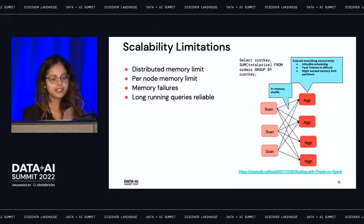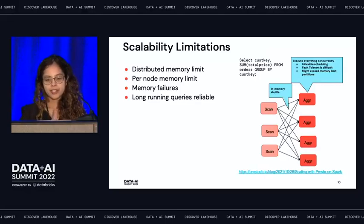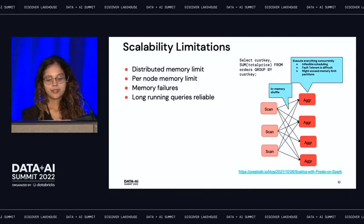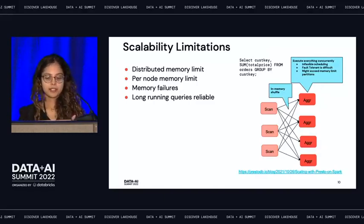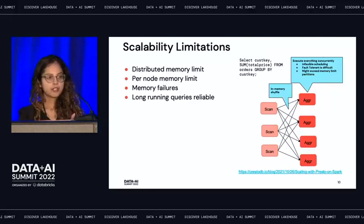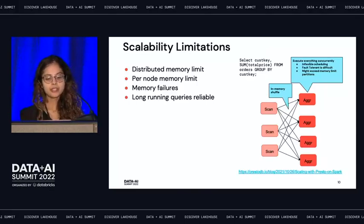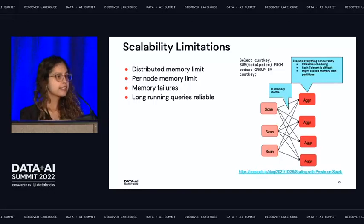But then you run into scalability limitations. For example, a query over the TPC-H orders table doing a GROUP BY on customer key: since Presto does in-memory streaming shuffle, it has to move all the data continuously from mappers to reducers. If data isn't moving continuously, the in-memory buffer on the mapper side can get full and stall execution, while on the reducer side the buffer is underutilized and causes unnecessary operational overhead.